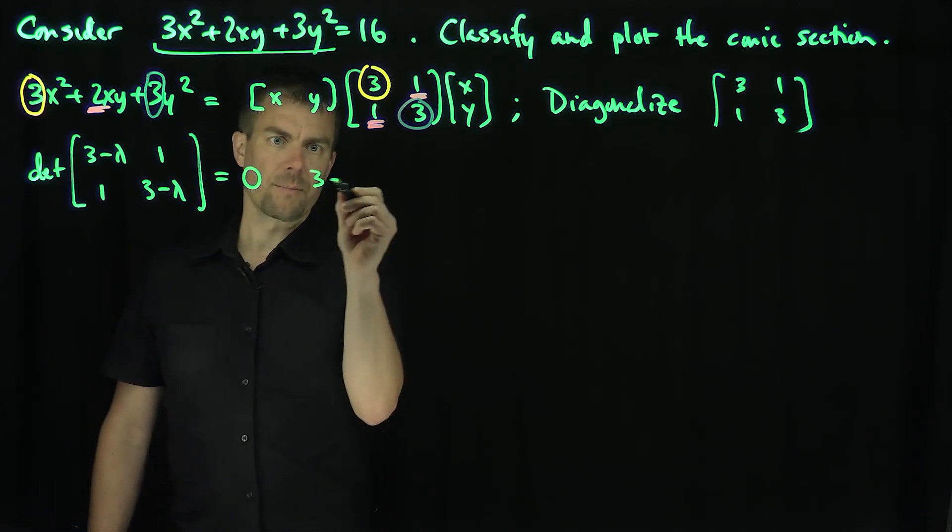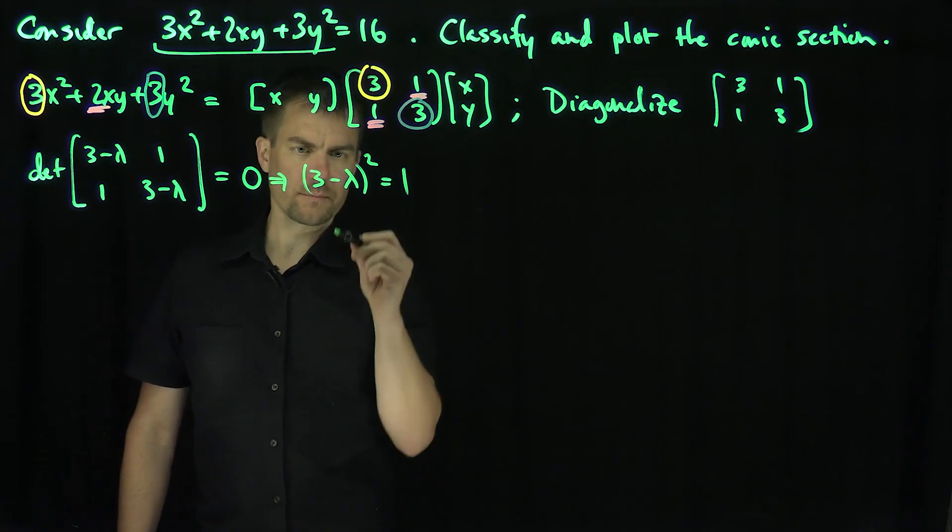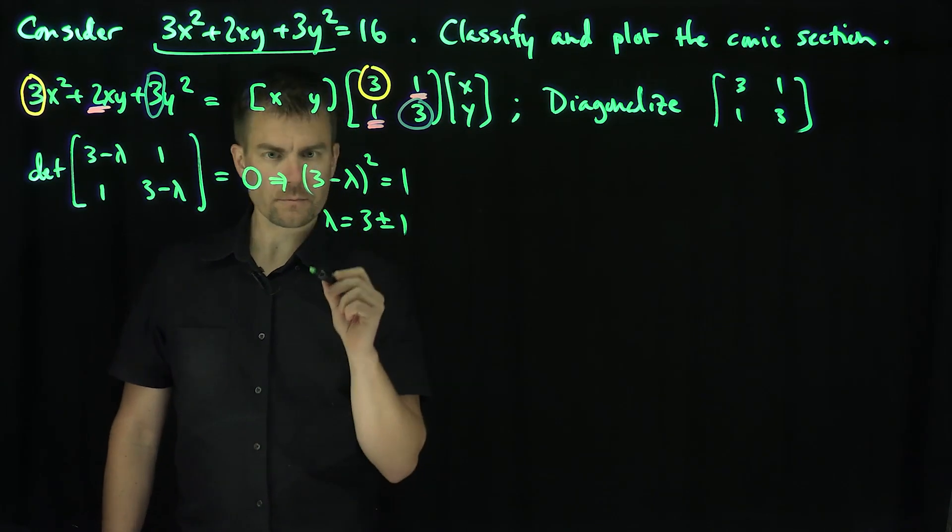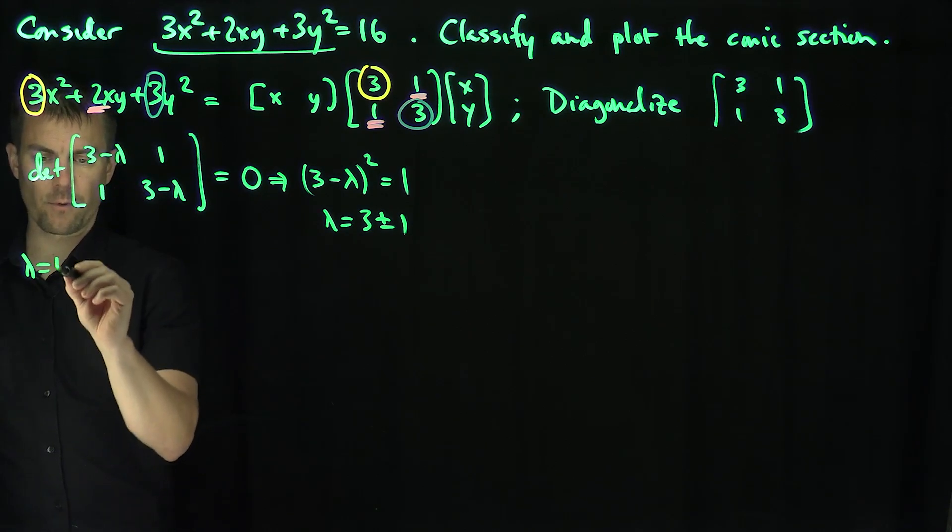We're going to get from this (3-λ)² = 1. So λ = 3 ± 1. So we have a 4 and a 2. Let's look at λ = 4 first.